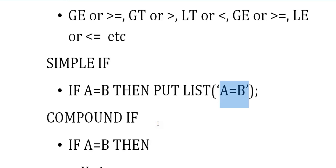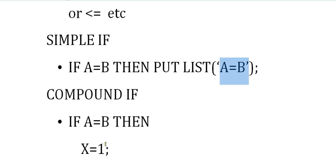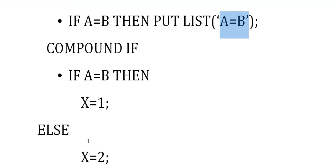If that condition is satisfied, then put list 'A=B'. In the same way, if you want to check multiple conditions, you can go for a compound if statement: if A equals B, then X equals 1, else X equals 2. This is the simple compound if statement. Based on this, you can write multiple else-if conditions and program accordingly.